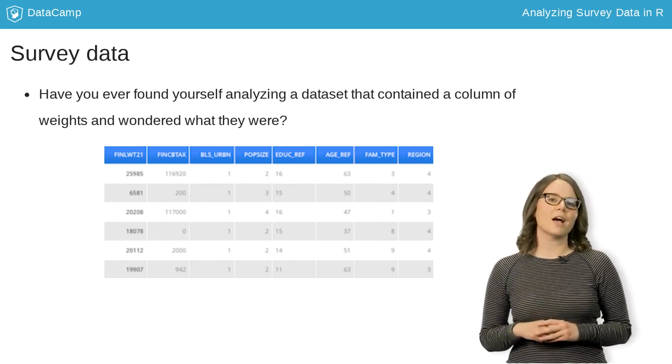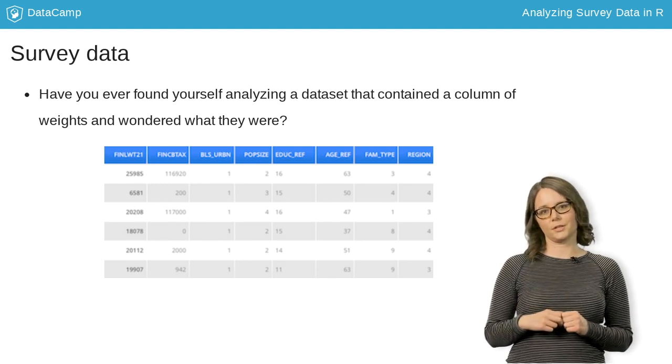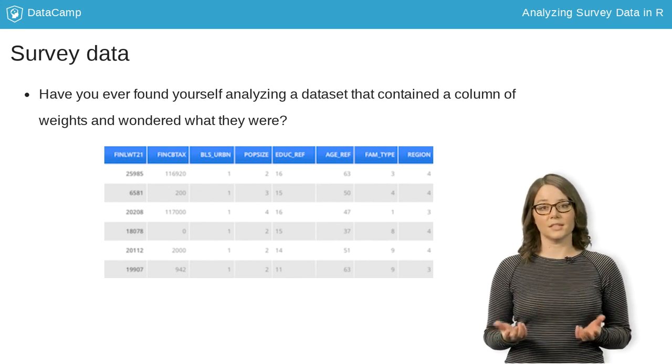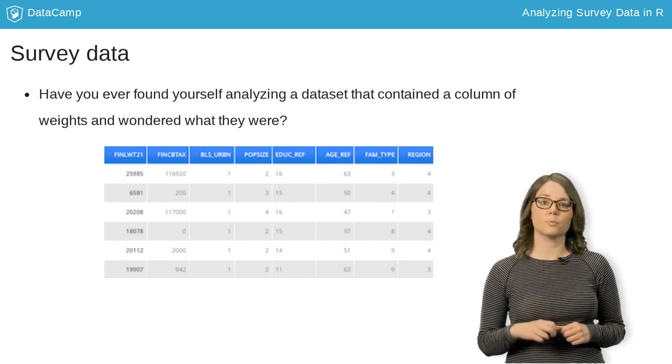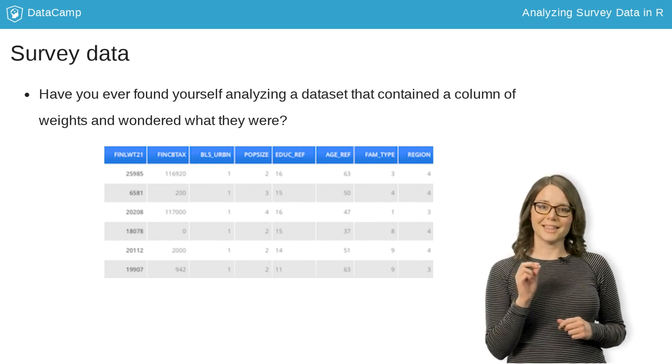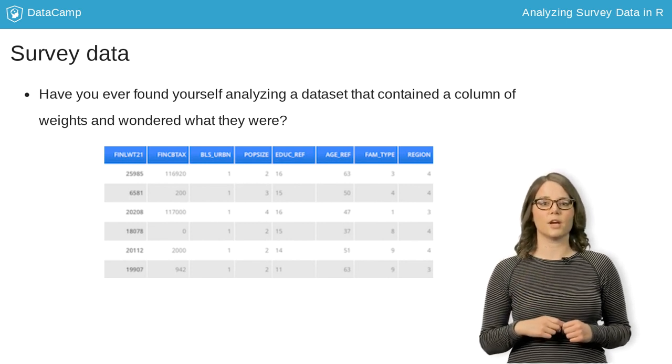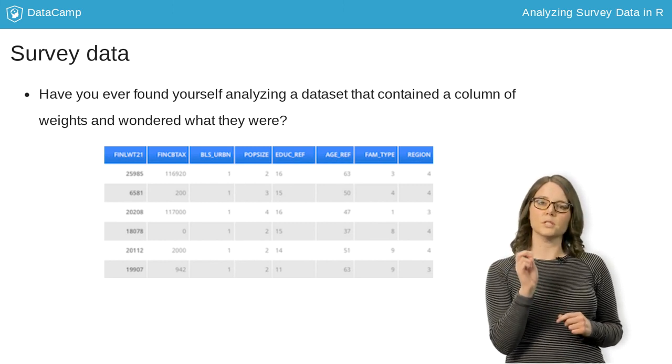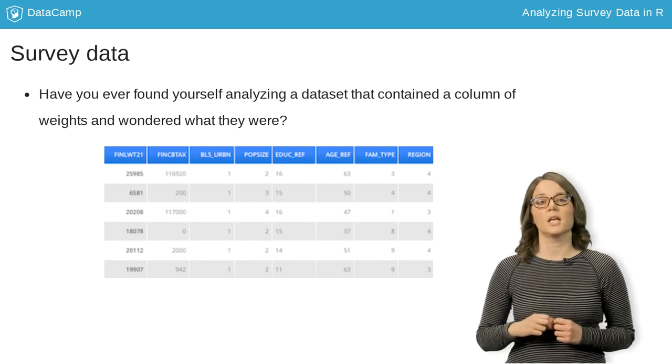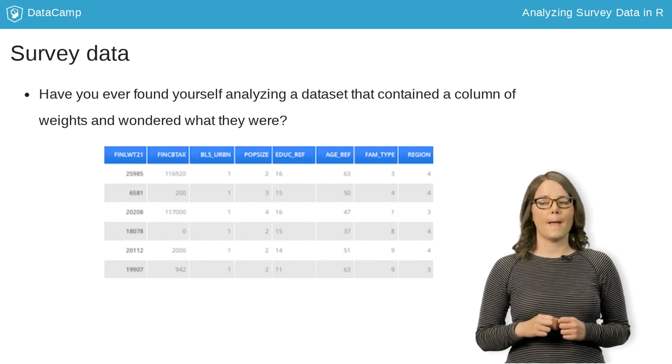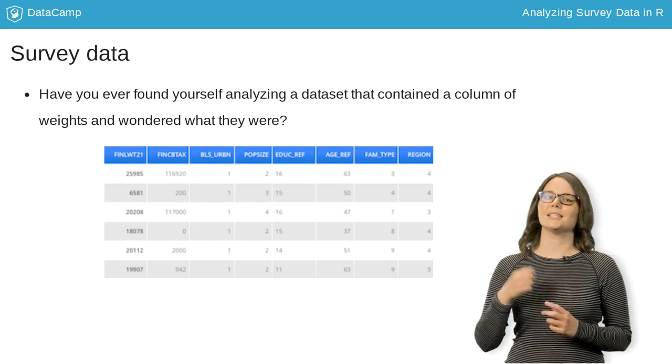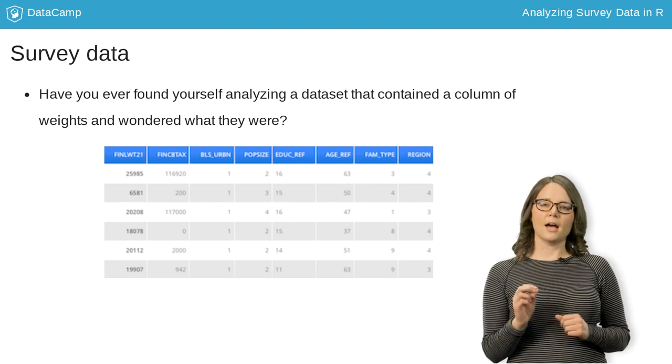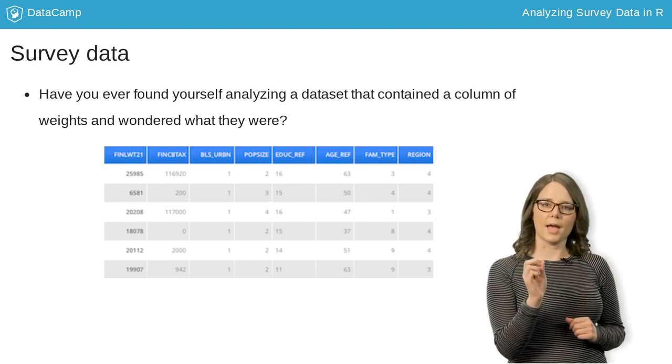Well, let's pretend we have found ourselves in this situation. We want to estimate the average household income in the U.S. We find that the Bureau of Labor Statistics provides a public use dataset, and this dataset includes the variable FinkBtax, given in the second column here, which is the amount of household income before taxes in 2016. But the first column in the dataset is a survey weight variable, final weight 21. How should these weights impact our analyses?